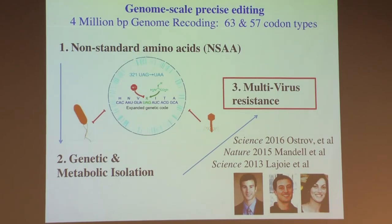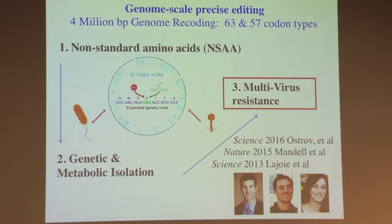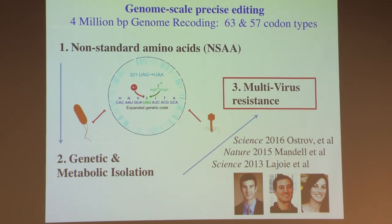Getting back to changing the genetic code — this is cutting-edge synthetic biology because we literally have to change every gene to change the codons. There are 64 triplet codons that allow you to go from DNA/RNA code to protein code. We've completely and successfully changed one codon of the 64, making the first organism in the world that uses only 63 codons. All natural variants of the genetic code use all 64. There were three practical advantages: non-standard amino acids, genetic and metabolic isolation for biocontainment, and most significantly, making any organism resistant to all viruses.